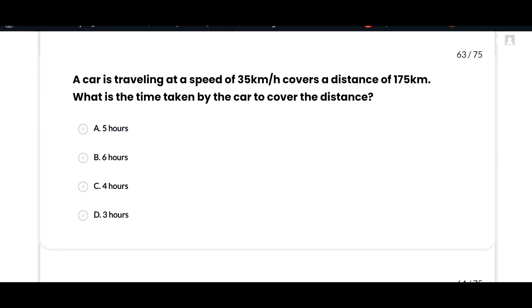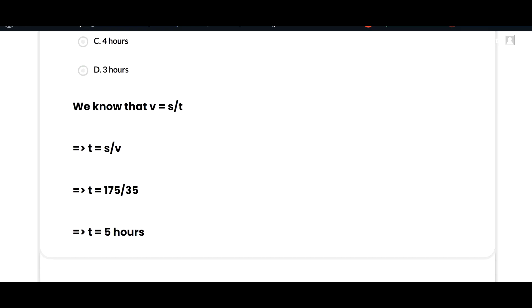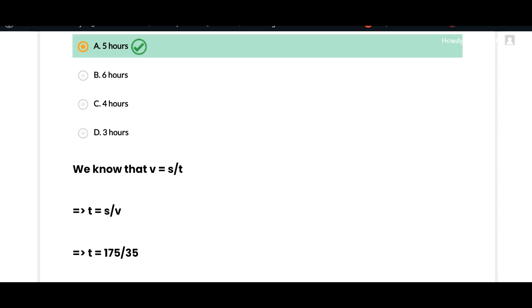Next question: A car is traveling at a speed of 35 kilometers per hour and covers a distance of 175 kilometers. What is the time taken by the car to cover the distance? Five hours, option A is correct, because we know that v equals s over t, so t equals s over v. The distance is 175 and velocity is 35, which gives us 5 hours.